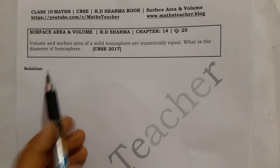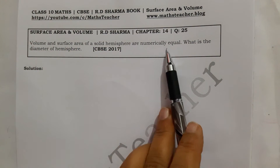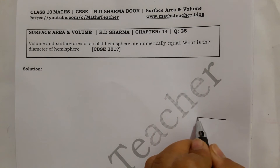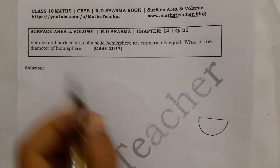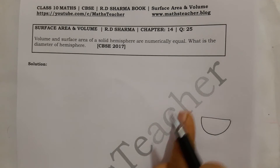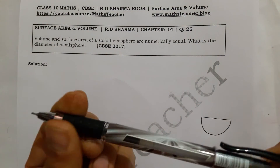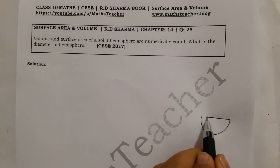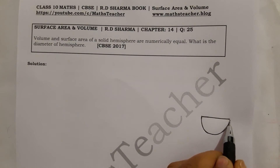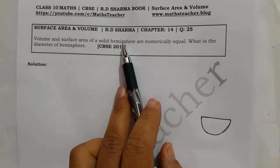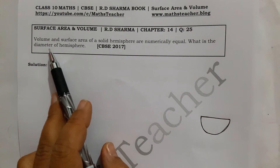Now the last question, Question 25: The volume and surface area of a solid hemisphere are numerically equal. Let's draw the hemisphere. The volume is what we can fill with water inside it, and the surface area of a solid hemisphere is the area of the curved surface plus the flat circular base — the total surface we can touch.